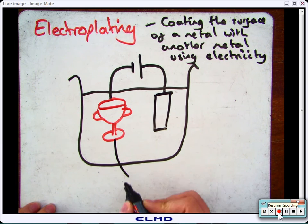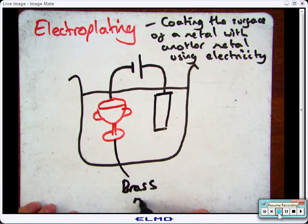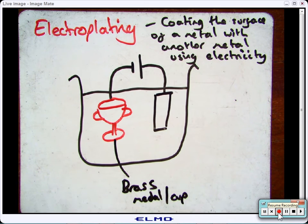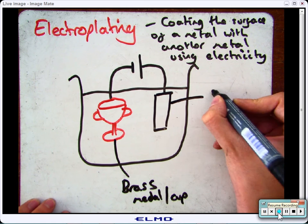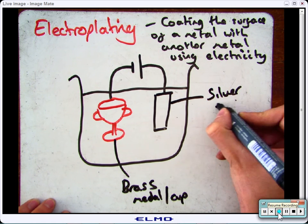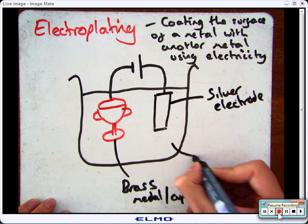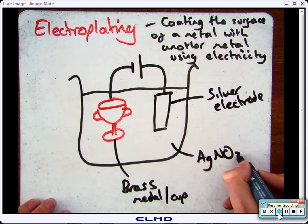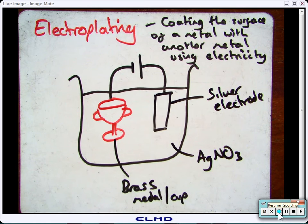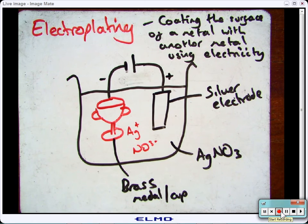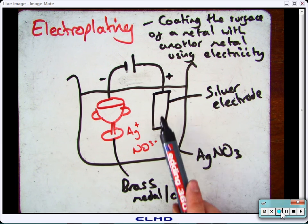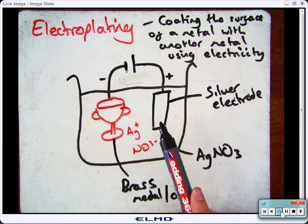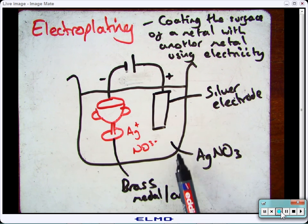So say you had a brass cup and you wanted to coat it in silver. What you'd do is you'd take a silver electrode and you'd have a silver electrolyte like silver nitrate. In this example, the cathode is the brass cup. The anode is pure silver. The electrolyte is silver nitrate solution.